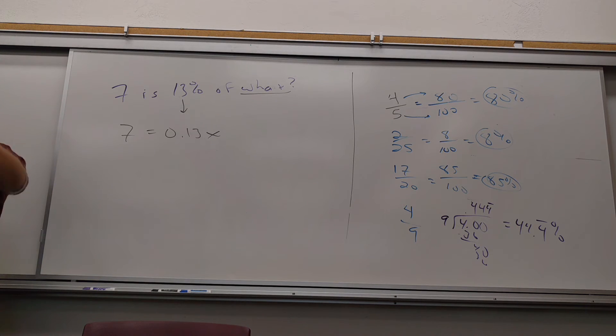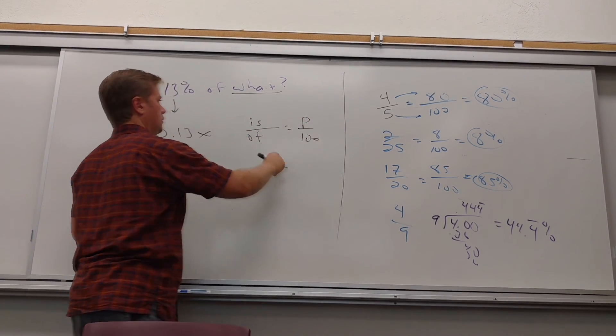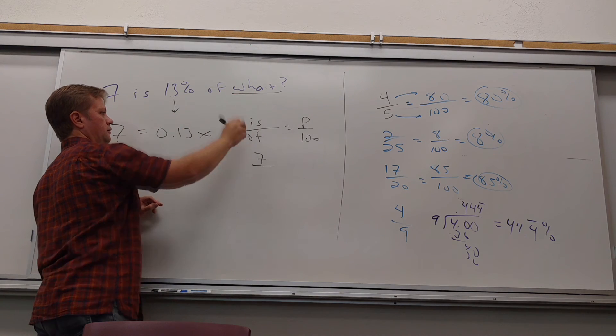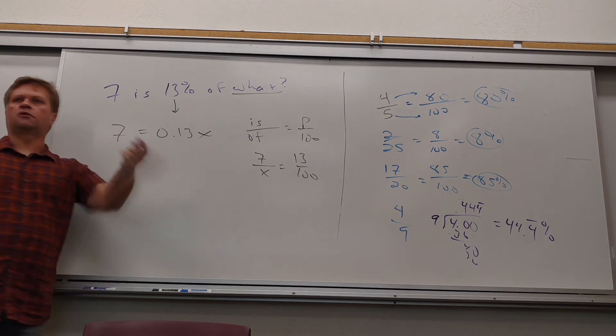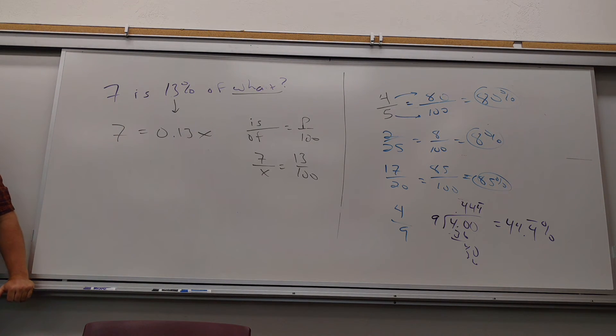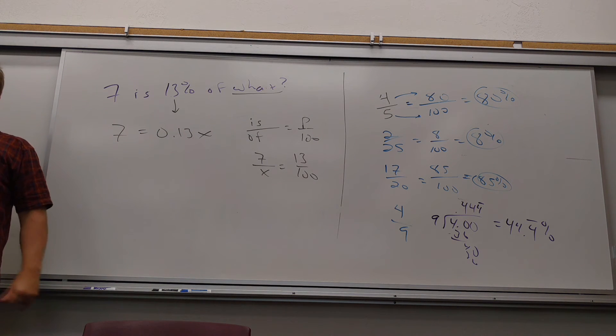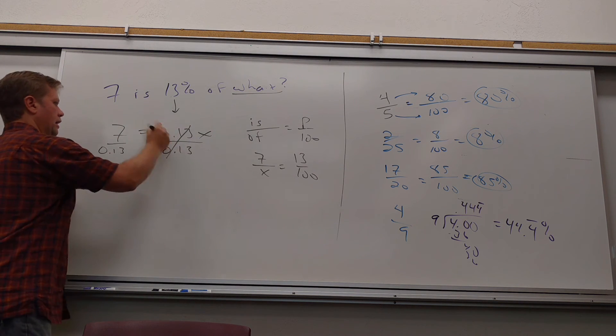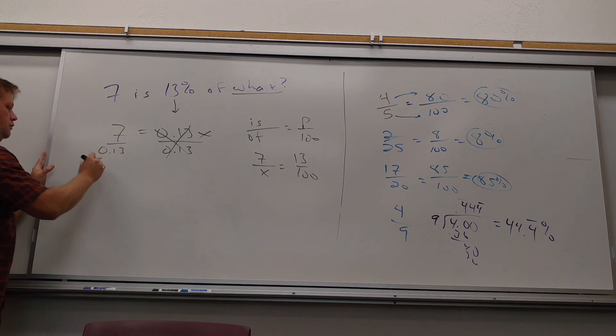Now if you did is over of, how would you set this up? What's the is? Is is seven. What's the of? And what's the percentage? Thirteen. And then you can cross multiply. But there's so many places to go wrong. You misidentify the is or the of. To me, it's just so much better just to convert this directly into an equation. And there's always just one step to do, if any. Either way you do those fine because they're both valid. Yeah, so now divide by point one three. And I would tell you to round this to something. What is seven divided by point one three? Fifty-three point eight.